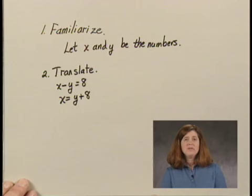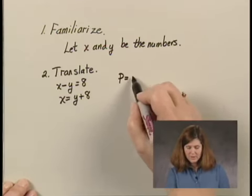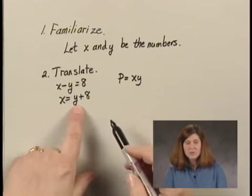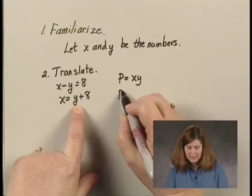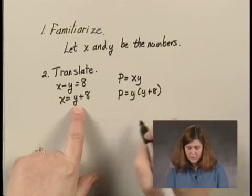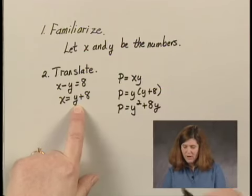Now, we're trying to find the product of the numbers. So the minimum product, the product is xy. So where I have an x, I'm going to put y plus 8, or y squared plus 8y.